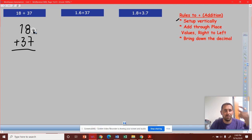So we're going to do 8 plus 7 is 15 and carry the 1, 1 plus 1 plus 3 is 5. So our answer is 55.